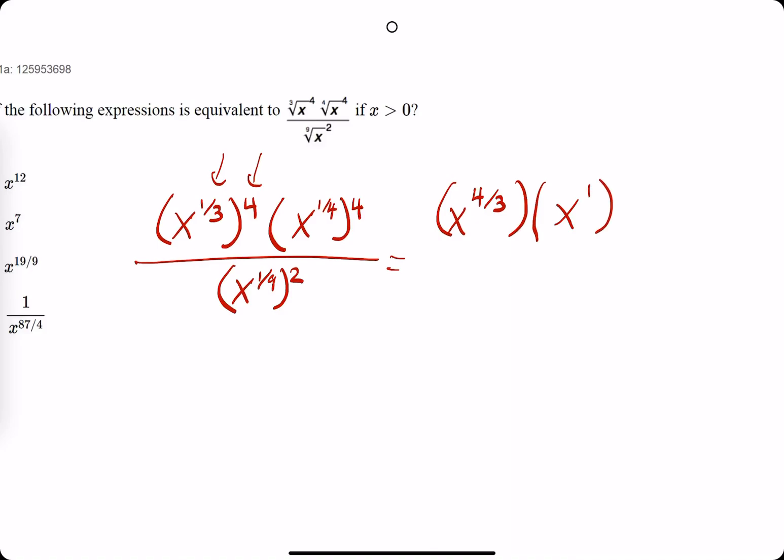On the denominator, we have x to the one-ninth squared. So we have x to the two-ninths. Two times one-ninth is two-ninths.